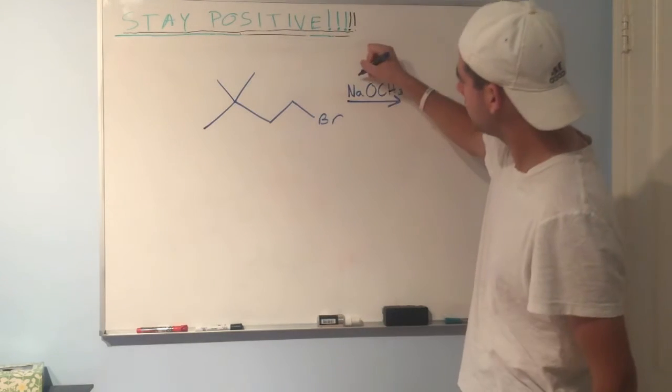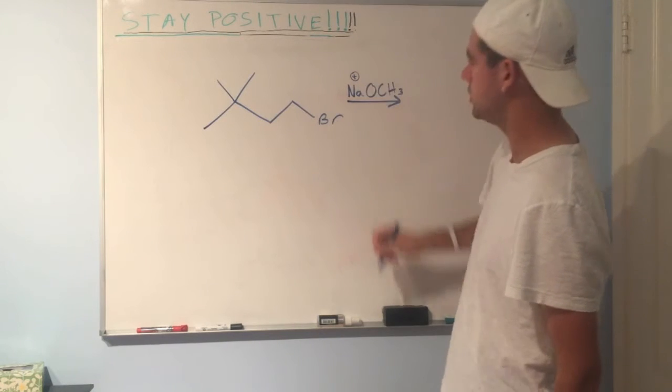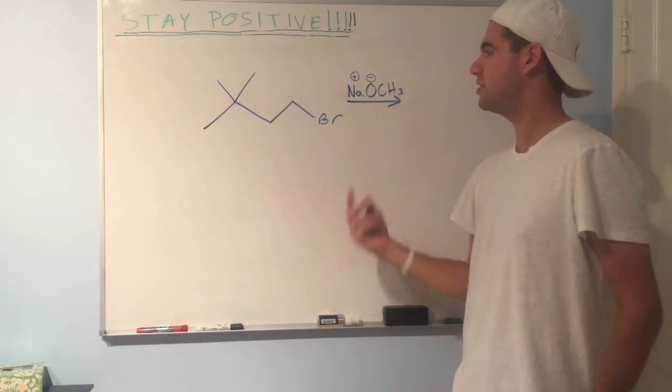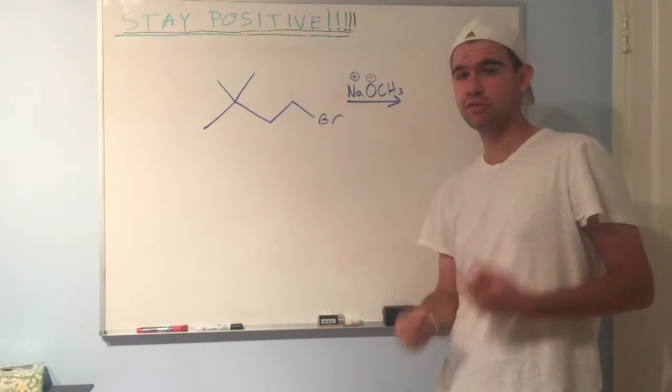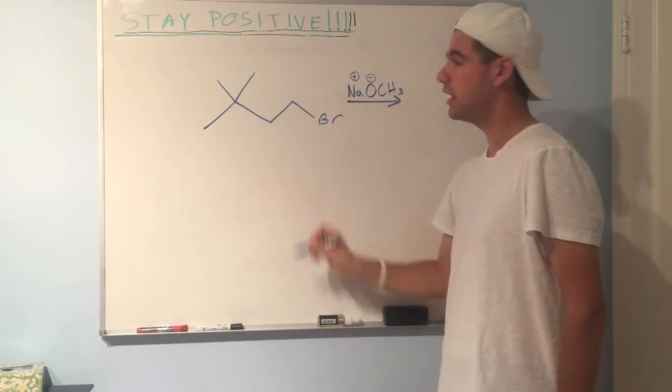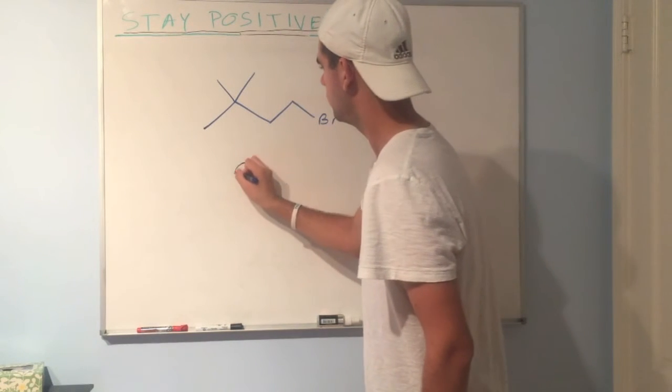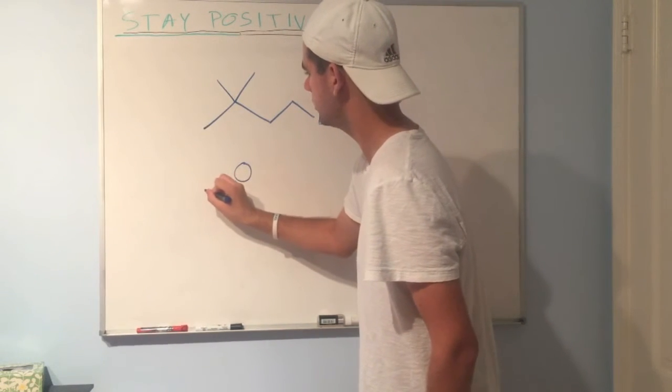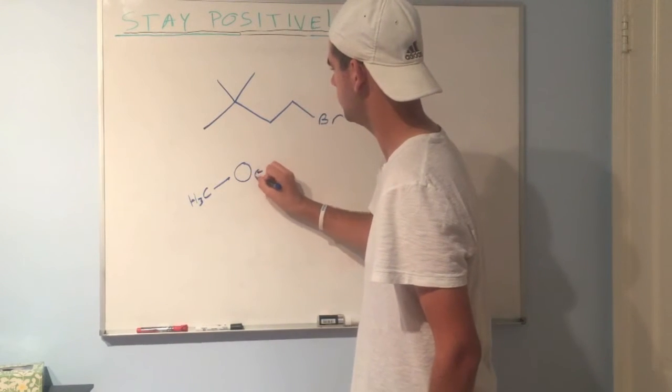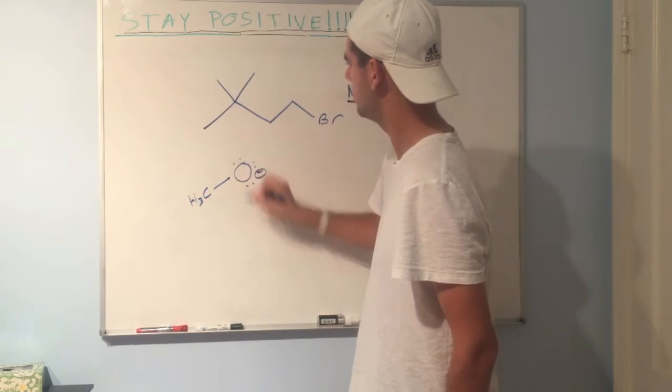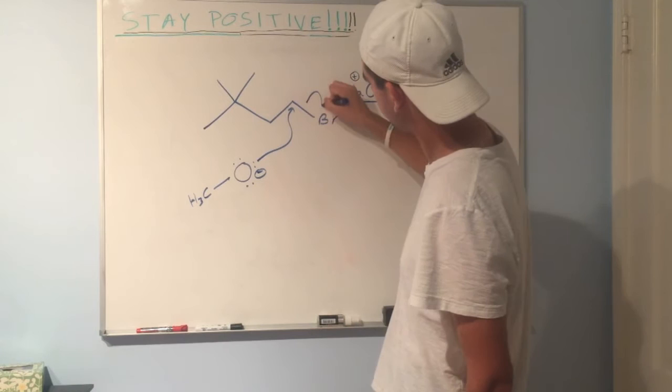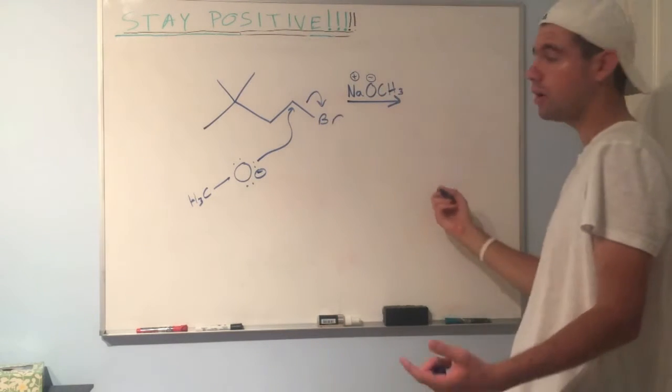So Na, we know, is positively charged ion. OCH3, oxygen with one bond, negative formal charge. So what's going to happen is this: identify the electrophile, step one. Right here, this carbon is electrophilic. So we have OCH3, negative formal charge. We're going to attack the electrophilic carbon just like that, kick off the leaving group.